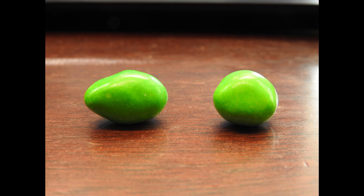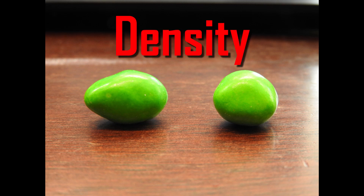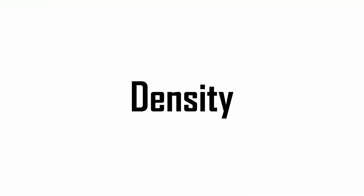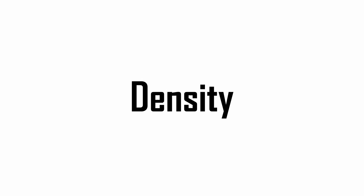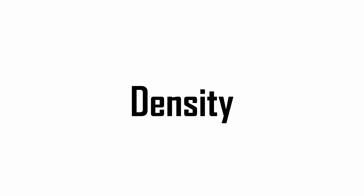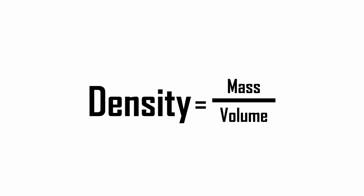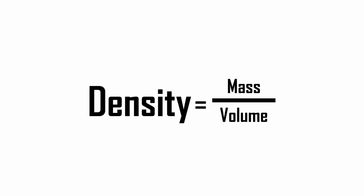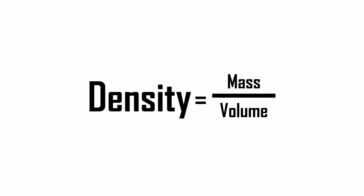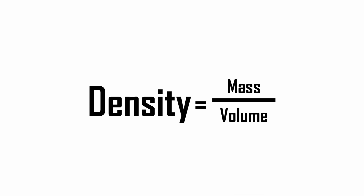Rather than trying to see through the M&M, I decided to try to calculate its density. If you're not familiar with the concept of density, it's really simple. The density of an object is just the ratio of its mass to its volume — it describes how much stuff an object has per unit of volume.